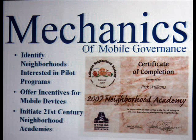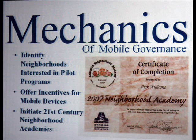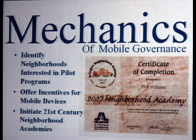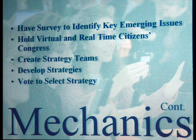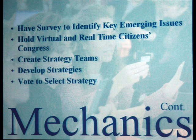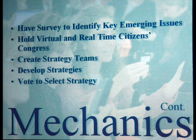We also talked about the 21st Century Academies — making sure that folks have an understanding of identifying weak signals, how to facilitate meetings, and how to think outside of their traditional idea spaces. We would use some traditional techniques such as surveys to identify key issues. We'd also hold a virtual and real-time Citizens Congress to get input as part of those four steps.